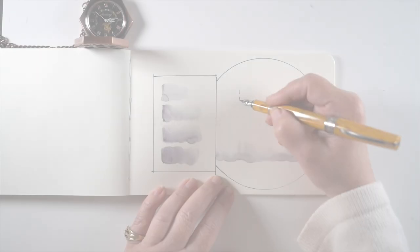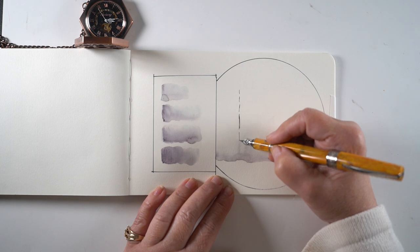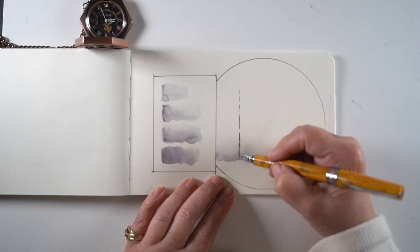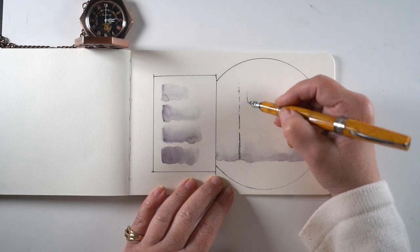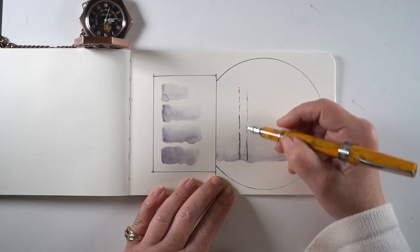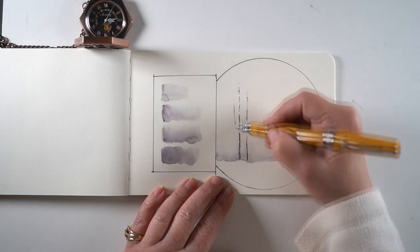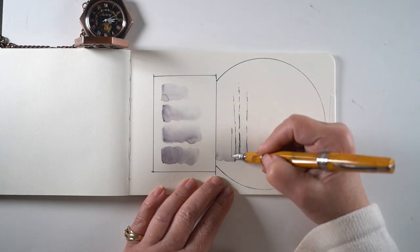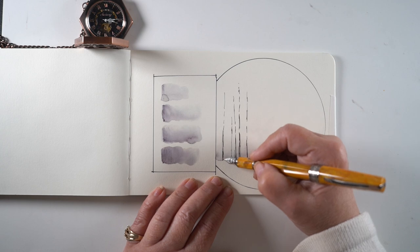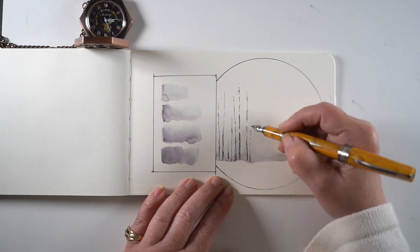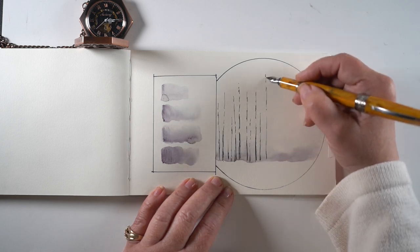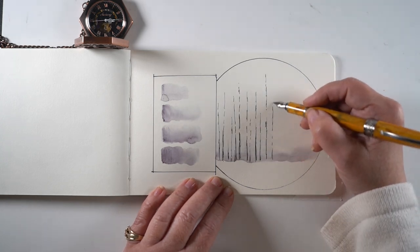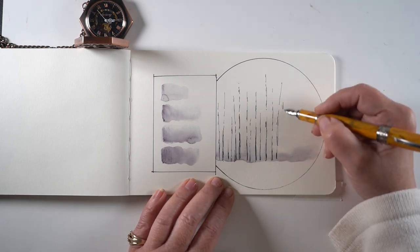Get it good and dry and then draw tree trunks. Tree trunks don't have to be straight. Do not get a ruler out because Mother Nature doesn't work with a ruler either. So make them kind of broken tree trunks so that there's a little room for some snow to get in between because these are winter trees.